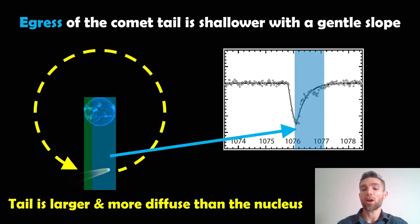Now if we go to the tail half, once the tail starts to actually pass in front of the star, I'll put the egress here because at this point, the nucleus has already gone on the other side of the star and you're left with just the tail. Now the tail gets more optically thin as it gets further away from the comet.